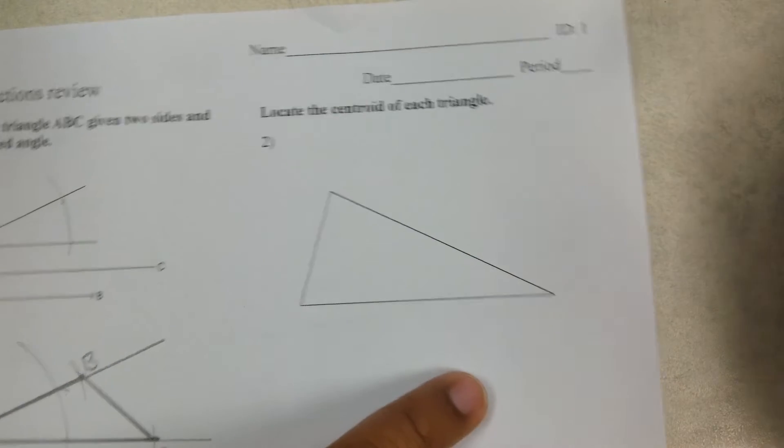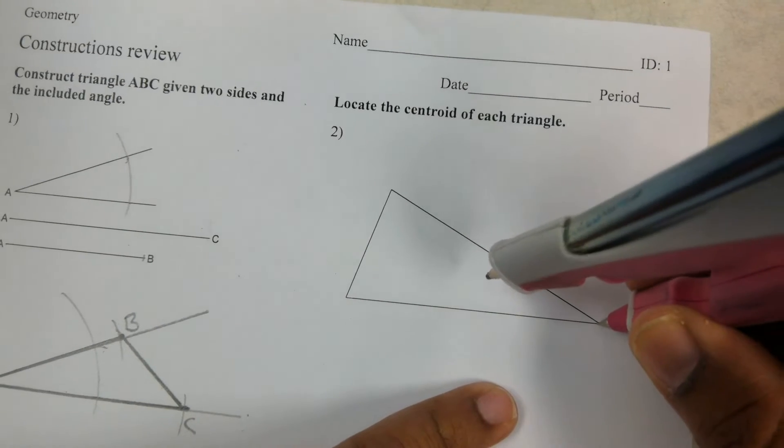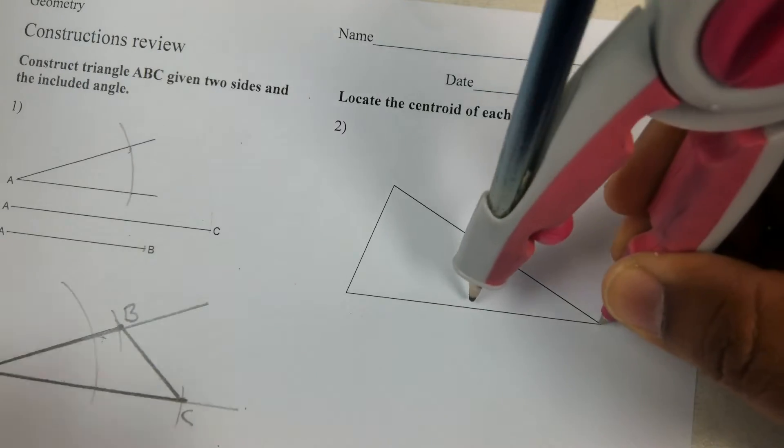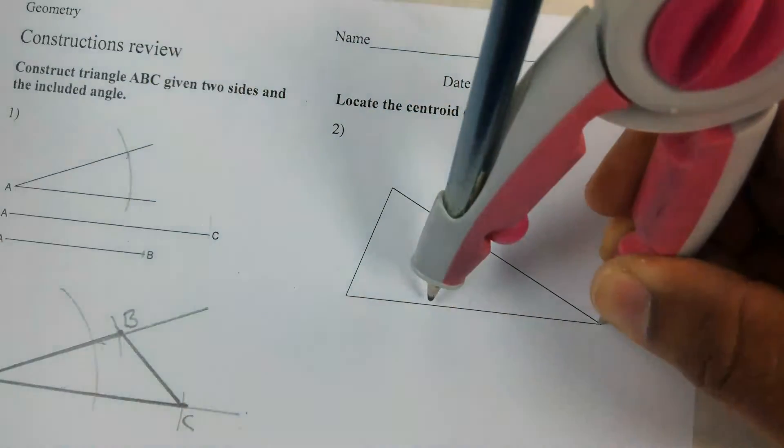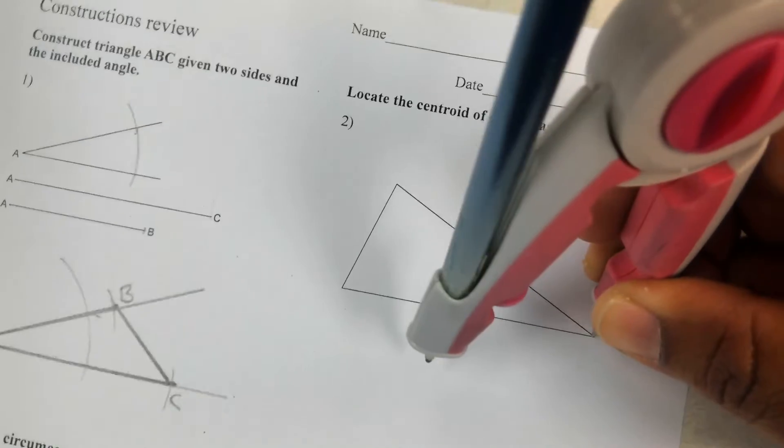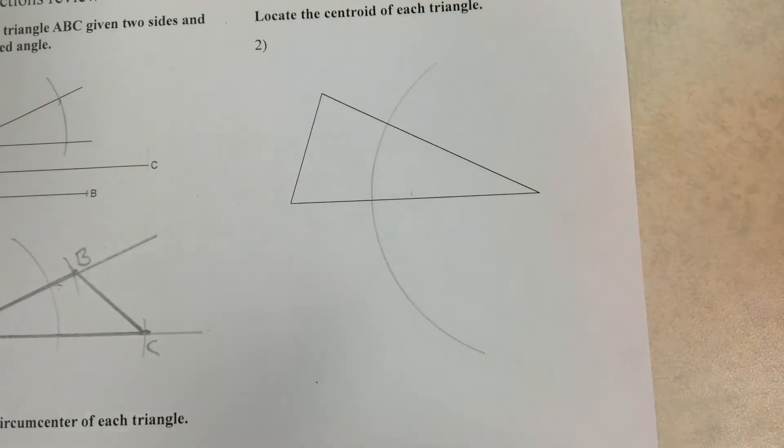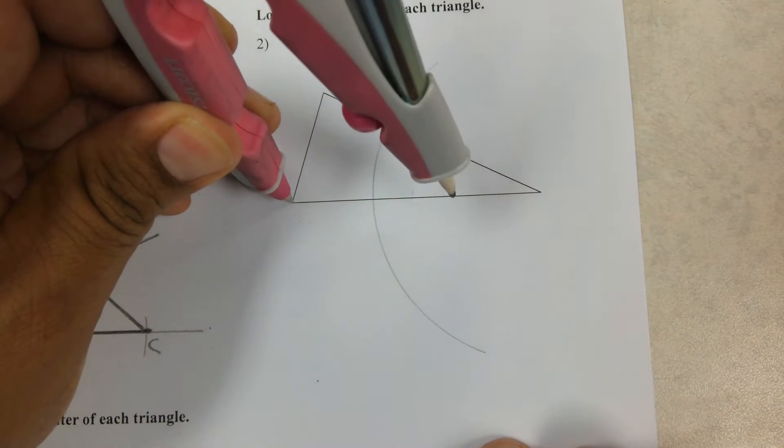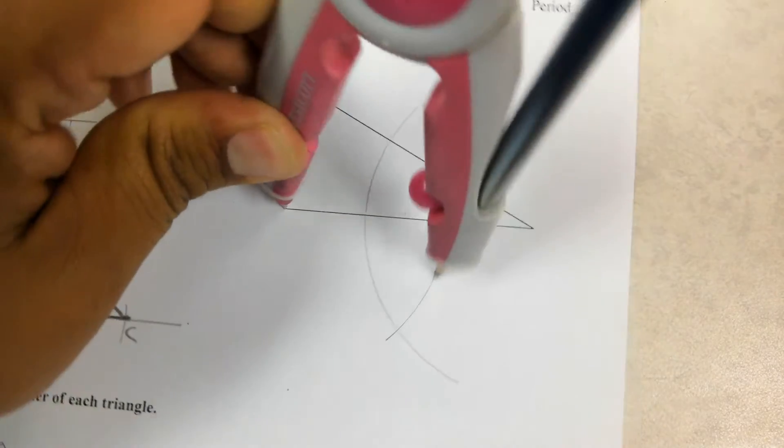I want to cross it at 90 degrees through the middle, so I'm going to put my compass on the right side, open it to more than half, and I'm just going to do a big arc. From the other side, I'm just going to do a big arc as well.